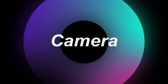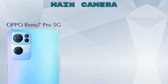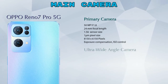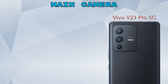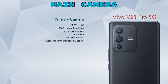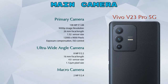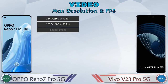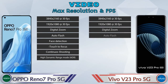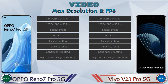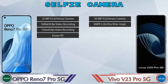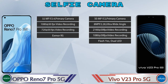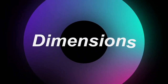Now let's talk about cameras. The Reno 7 Pro 5G has three rear cameras: a primary camera, an ultra-wide angle camera, and a macro camera. The V23 Pro 5G also has three rear cameras with the same setup. For front selfie cameras, the Reno 7 Pro 5G has a single camera with four features, while the V23 Pro 5G has a dual camera setup with five features available.